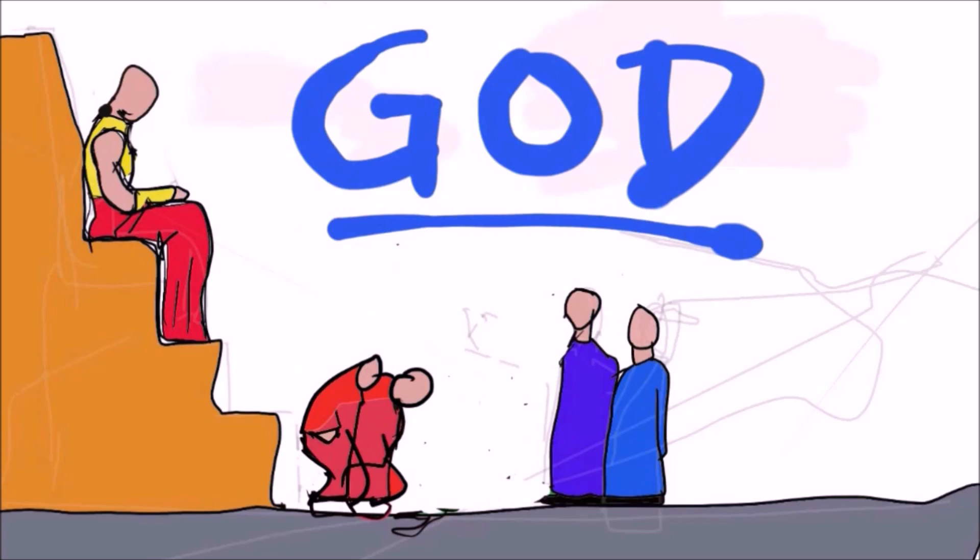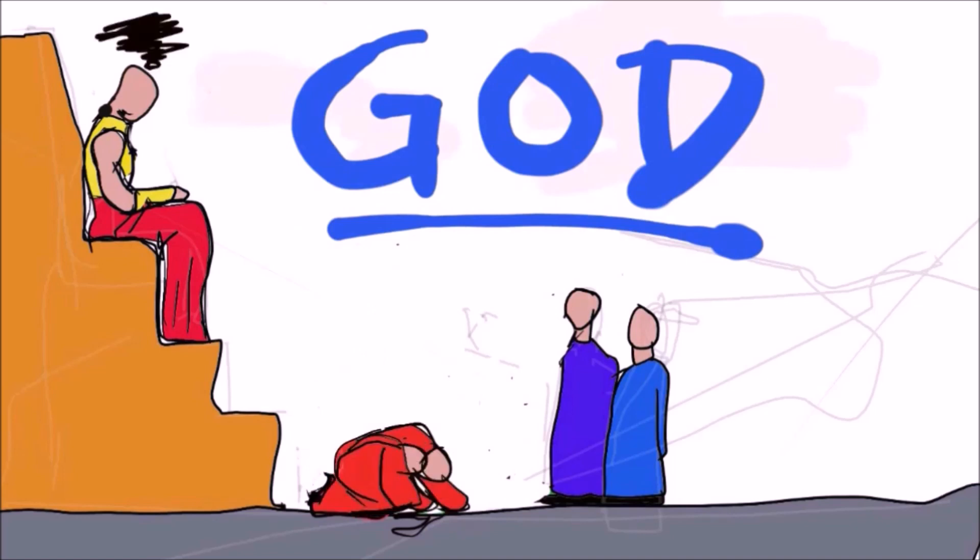Little by little, the resistance of the Pharaoh's magicians begins to turn to fear and reverence. But in contrast, despite warning after warning, the Pharaoh continues to stand firm in his pride and rebellion.